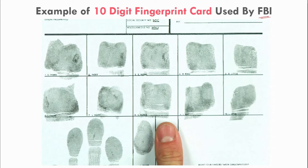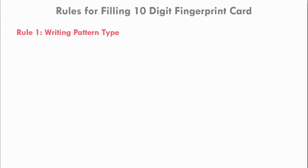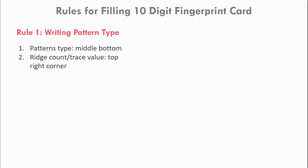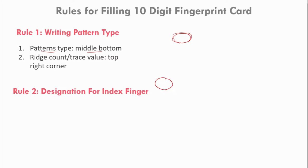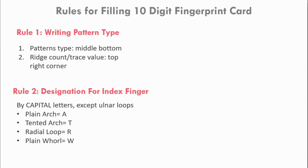The rules for filling the fingerprint card are as follows. Rule 1: the pattern type is written at the middle bottom, while the ridge count and ridge trace value sit at the top right corner. For example, in a whorl pattern block from a 10-digit card, the pattern type is written at the bottom and the ridge trace value is written at the top right corner. Rule 2: index fingers are designated by capital letters — plain arch is capital A, tented arch is capital T, radial loop is capital R, and plain whorl is capital W.